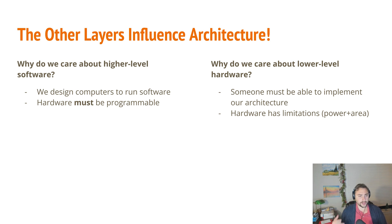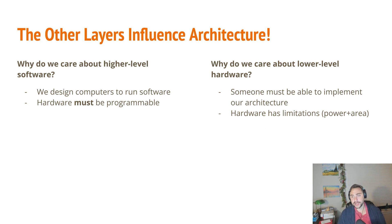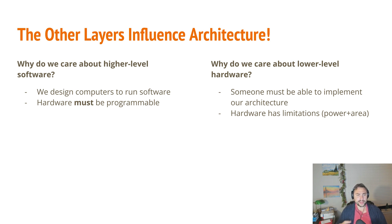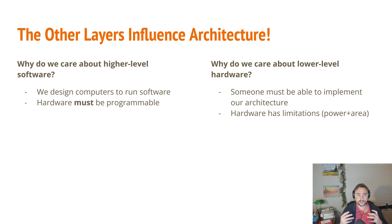Why do we care about the lower levels of abstraction? At the end of the day, somebody needs to be able to implement our architecture, and our hardware often has limitations. We often have a limited area we're working with for our chips, and we have a certain power envelope. So we have all of these different trade-offs — of programmability, of power, and of area — and these all influence how our final architecture or design is going to look.